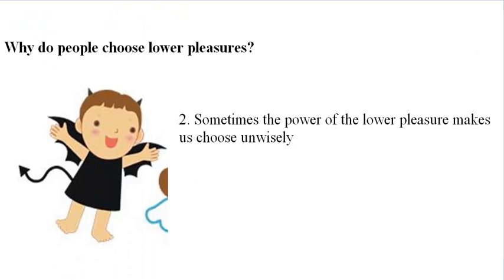The second answer Mill gives is that sometimes we know that one pleasure is better, but the power of the lower pleasure overwhelms our ability to choose wisely. We might put the drug addict in this category. We would not expect the drug addict to say the pleasure of drugs is more valuable than the pleasure of my family and career. We would expect instead that they might say, I know my family is more valuable, but I was overwhelmed by my desire for the drug.